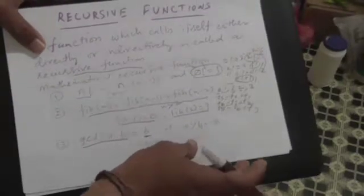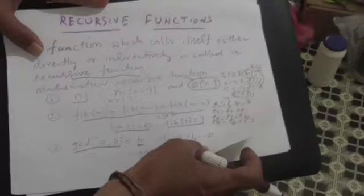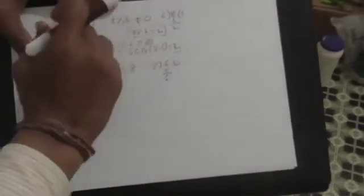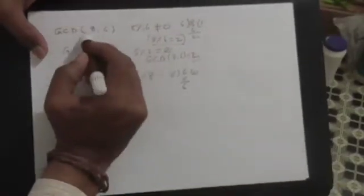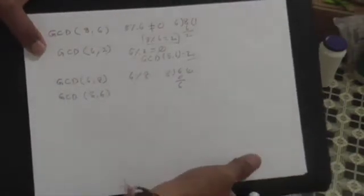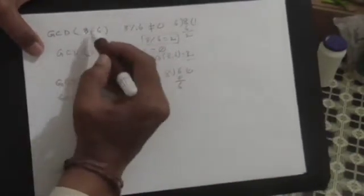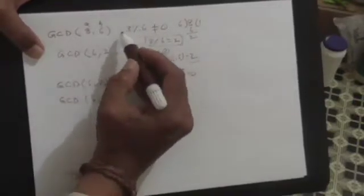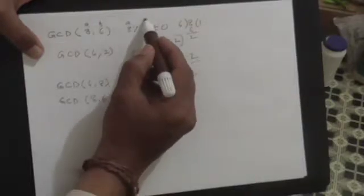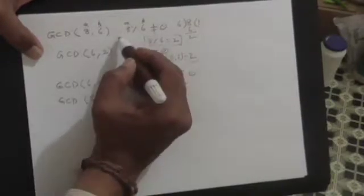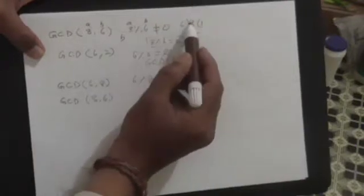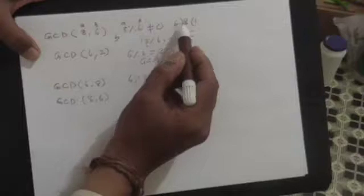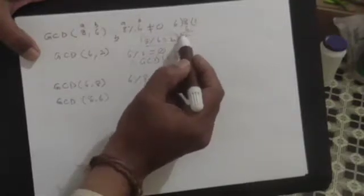So let us see one practical problem related to this. If I take two numbers, let us say 8 and 6, the two positive numbers, and if I want to calculate the GCD of 8 and 6, I divide this A. Let us take it as A and this as B. I divide A by B and if the remainder is 0, then B is the answer. But you see, when 8 is divisible by 6, 6 goes one time and the remainder is 2.